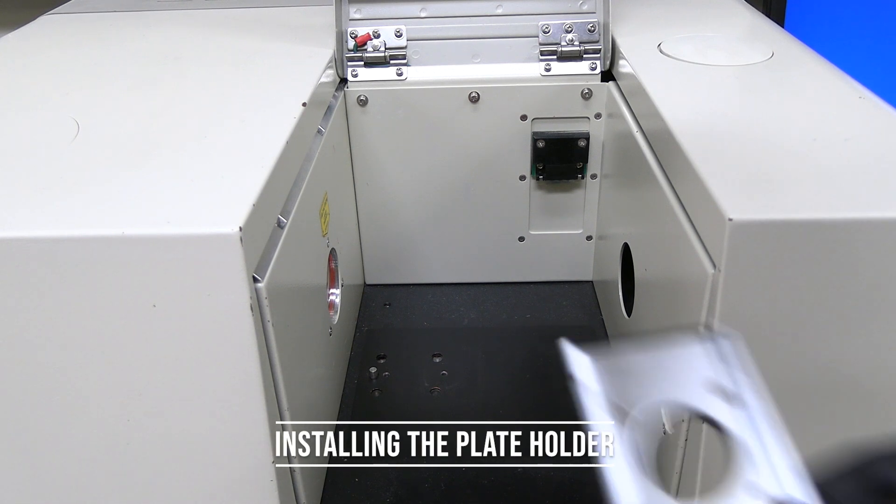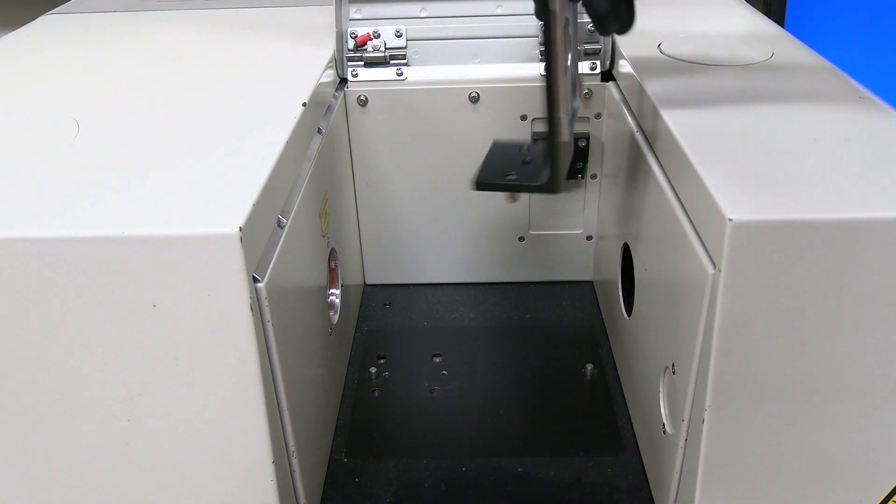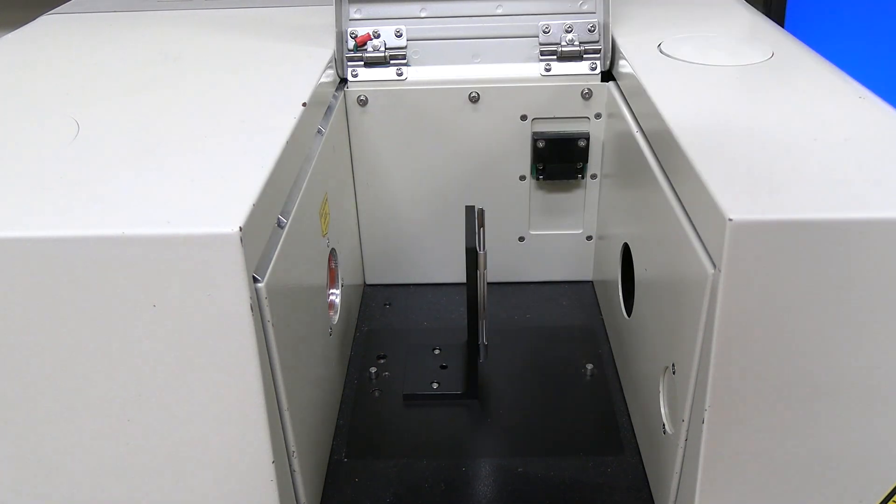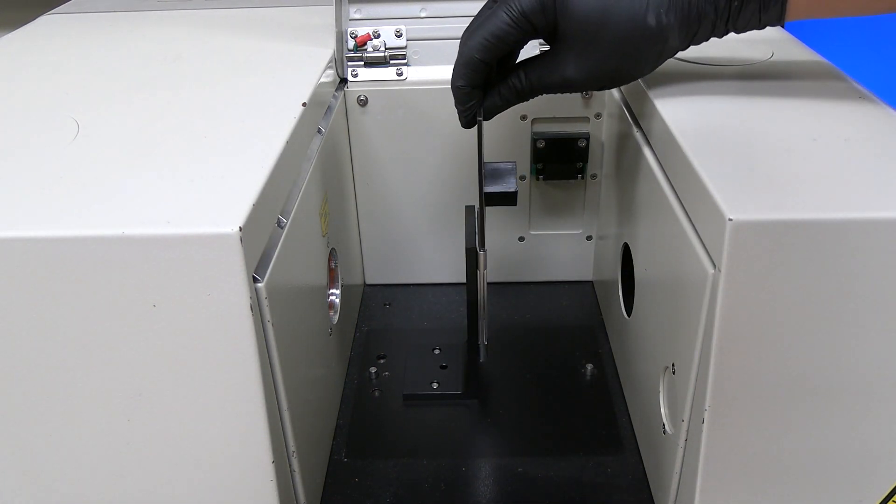Install the plate holder. Install the plate holder mount into the sample chamber. There are sets of holes for the mount pegs. Insert the plastic plate holder into the mount.